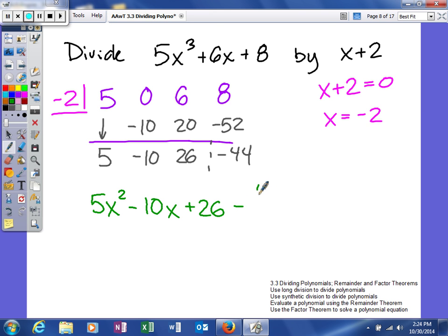The last number, when you use synthetic division, actually represents your remainder. So, we're going to take that number right there and put it under or over our divisor. x plus 2. So, that is the quotient and remainder for this division problem.